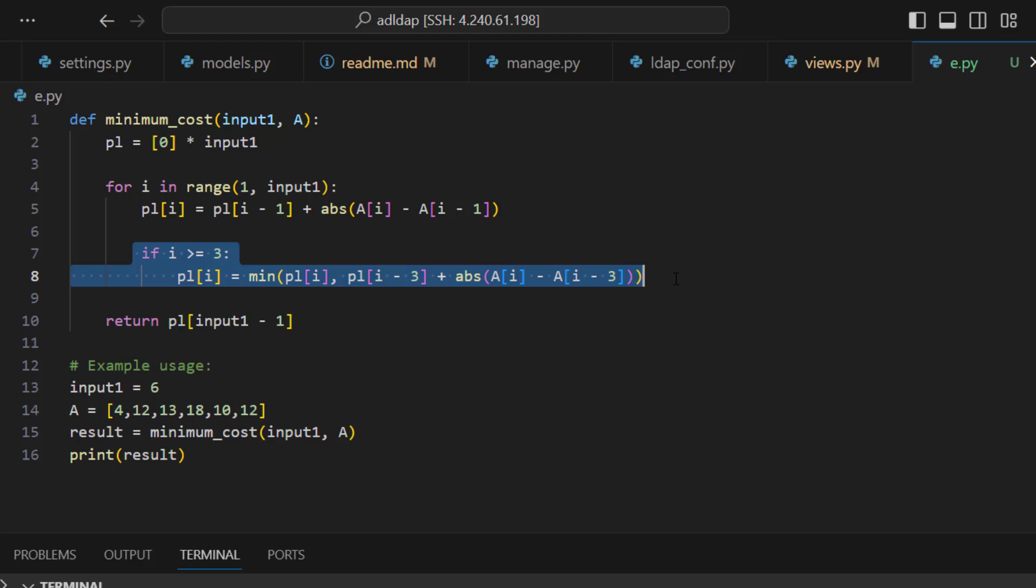I'm writing one condition: if i is greater than or equal to 3. This means if I'm crossing the third city, I have a chance of getting to this third city by taking three steps. Whenever I'm greater than or equal to city 3, I'm checking whether the step I took, one step, is less than three steps.